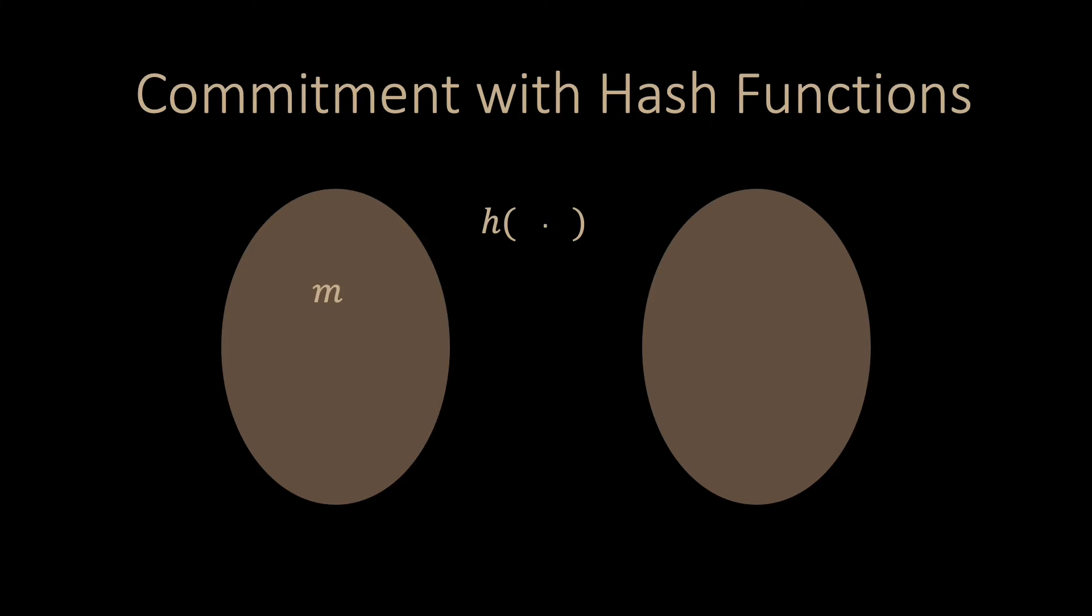How can we use a hash function to create a commitment scheme? Say Watson wants to commit to a message M. The protocol goes as follows. Watson chooses a random value R, concatenates R with the message M, and then computes the hash function H of M concatenated with R. The result C is the commitment.